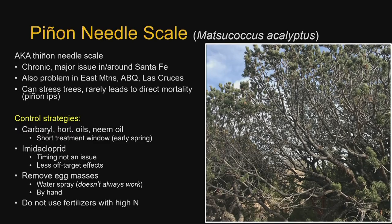You can see through the canopy that's been defoliated year after year. It's a chronic major issue in and around Santa Fe, the East Mountains, Albuquerque, and Las Cruces. It can stress the trees, and on top of drought stress, it can stress them even more, leading to problems. It rarely leads to direct mortality — generally we see thinning of the canopy — but it can stress trees to where they get secondarily attacked and killed by bark beetles.